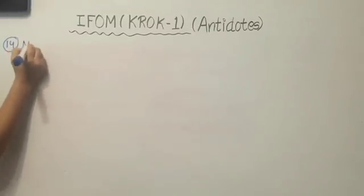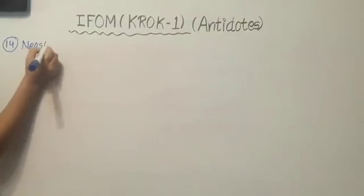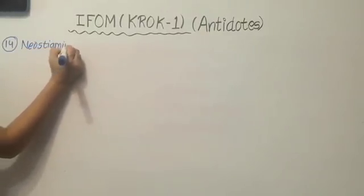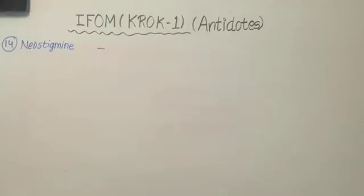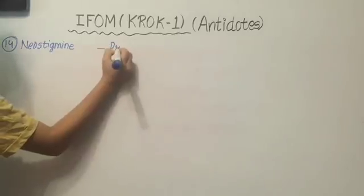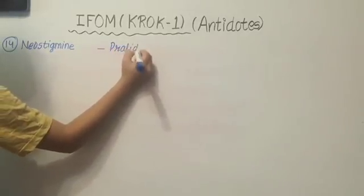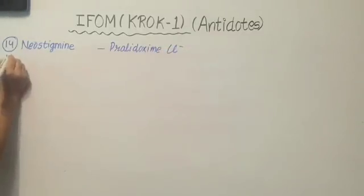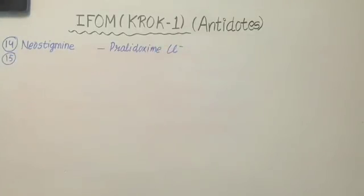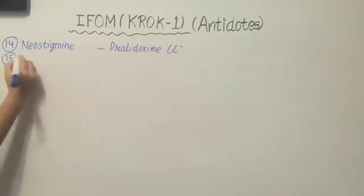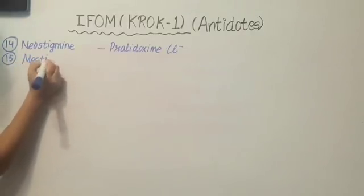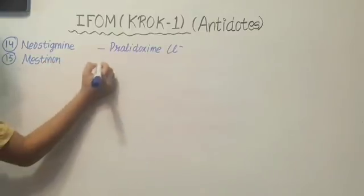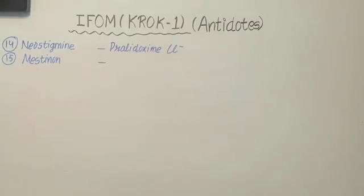Our next drug is neostigmine. The antidote of neostigmine is pralidoxime chloride. Our next drug is mustenone. The antidote of mustenone is atropine sulfate.